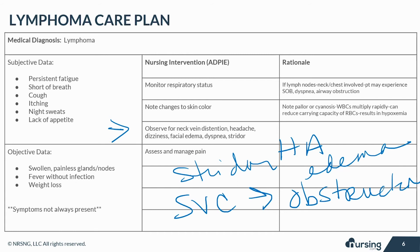Emergency radiation treatment may be ordered for this issue. While enlarged lymph nodes are usually painless, patients may experience pain with radiation and chemotherapy treatments. Management of pain and reduction of stress is essential to promote healing and conserve energy. Teach relaxation techniques and administer analgesics as necessary.